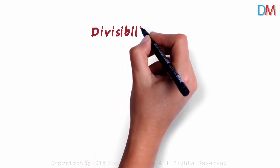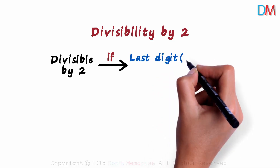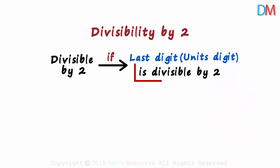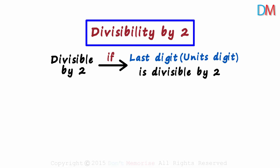Now let's move on to a few divisibility rules. First, let's look at divisibility by two. How can you tell if a number is divisible by two without performing any division? Here's the simple rule: a number is divisible by two if the last digit — that is, the units digit of that number — is divisible by two. Let's look at a couple of examples to see how easy it is.